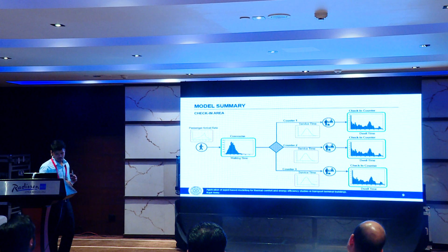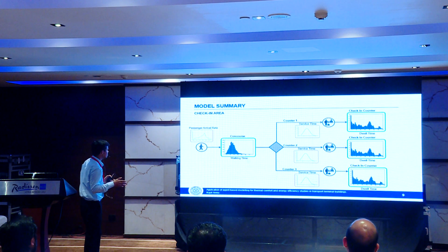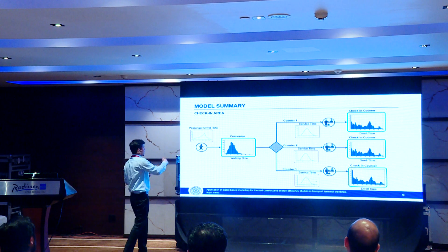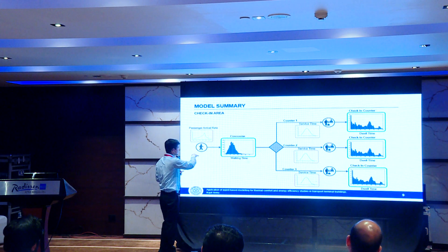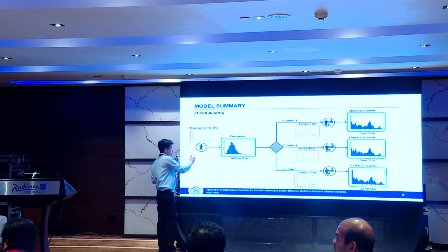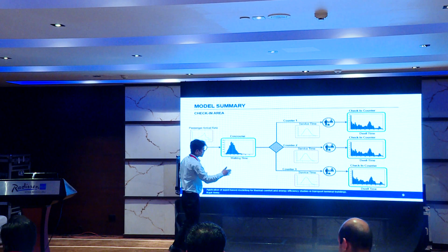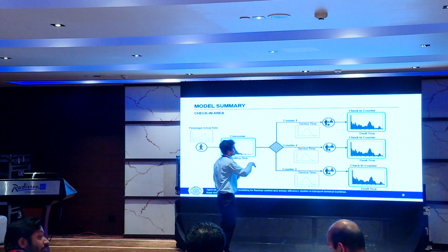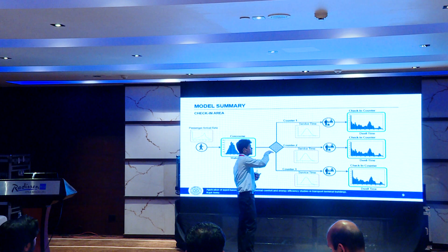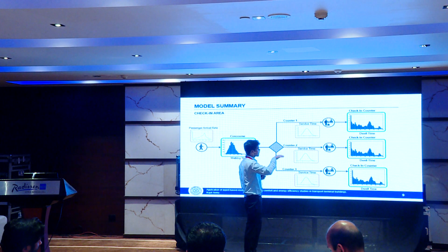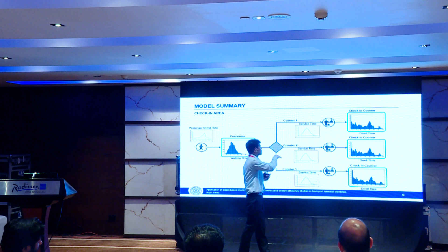This is the visual representation of how a passenger interacts with the check-in counter. First, the passenger arrives at a particular rate, and based on their speed, takes some time to reach from the entry to the check-in counter. They then decide which counter to go to. If there is a queue, they engage with it; otherwise, they collect their boarding pass within their service time.